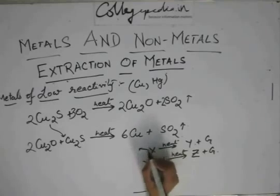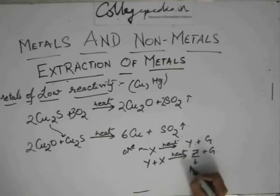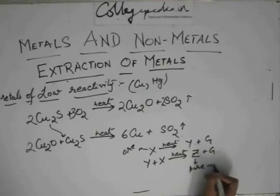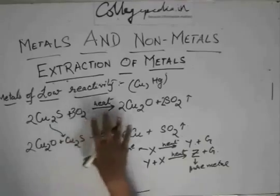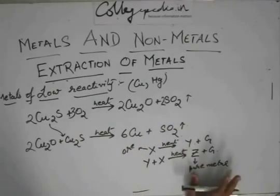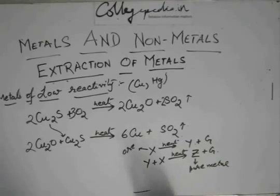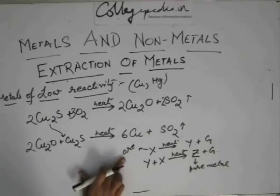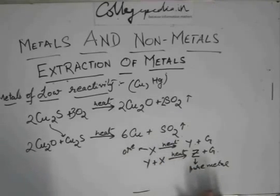You are given that X is an ore and Z is the pure metal. When you just get a random question like this, try to imagine that an ore you don't have anything added to it. It is just pure heating and then you are getting the pure metal. Two reactions you are getting the pure metal.